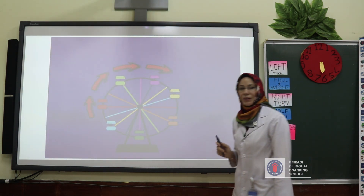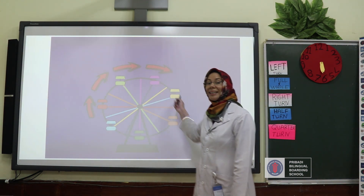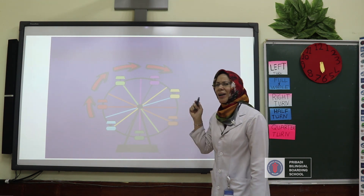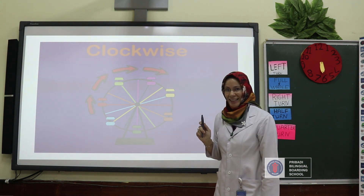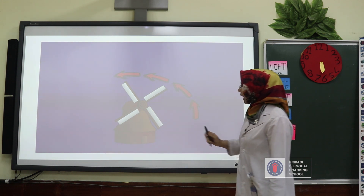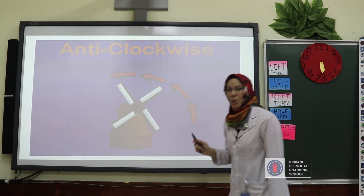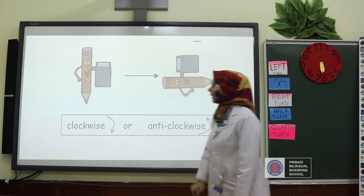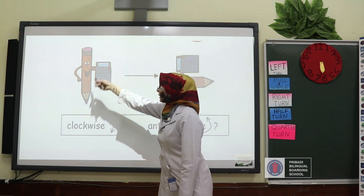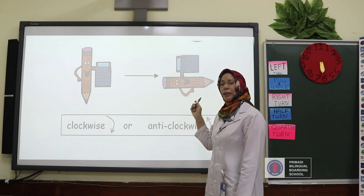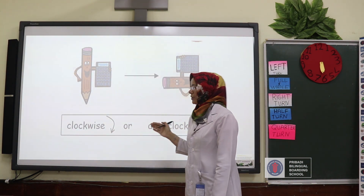Let's see another example. It's rotating in the direction to the right side. What is the answer? You are amazing — the answer is clockwise. Let's see the other one. This one is anticlockwise. You are doing well. If something is turning to the right side, it is called clockwise. If something is turning to the left side, it is called anticlockwise.